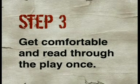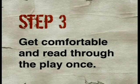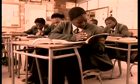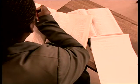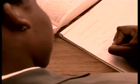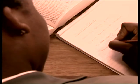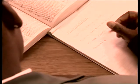Then it's time for Step 3. Get comfortable and read through the play once. In this quick preliminary reading, you should focus on learning the meanings of difficult words. As you read, you should start to become familiar with the personalities of the characters. At this stage, don't worry if you don't completely understand every word you read. The aim is to get a good feel for the play.